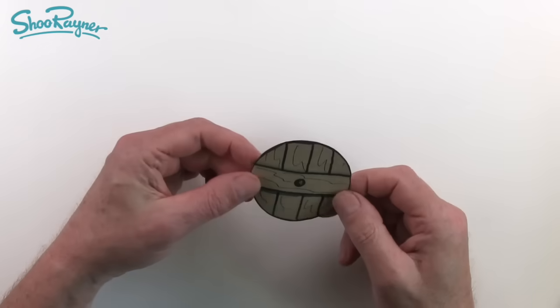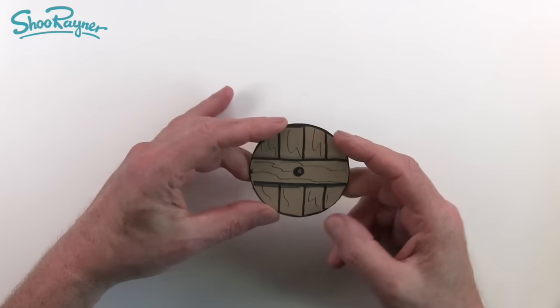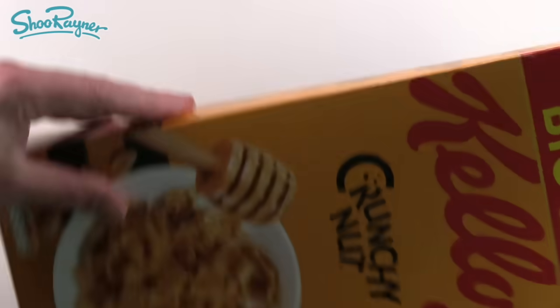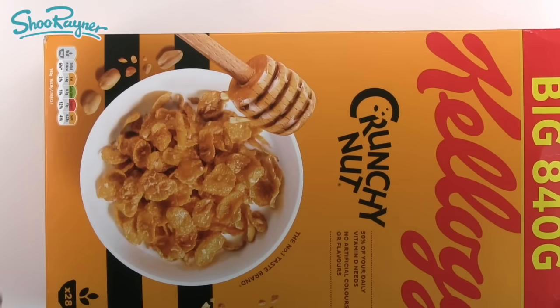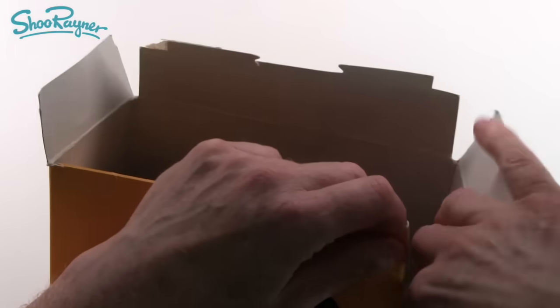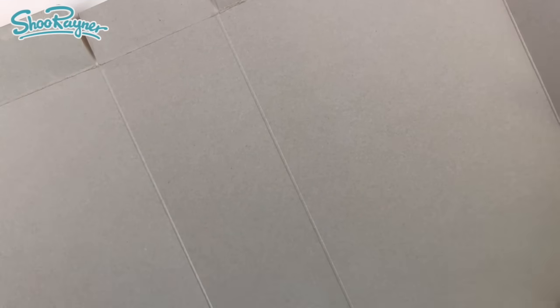Archimedes didn't have sophisticated tools, all he had was an old wooden cartwheel. Luckily we have sophisticated tools like Kellogg's Crunchy Nut Corn Flakes. What are we going to do with this? We're going to carefully open it out because we want the cardboard.